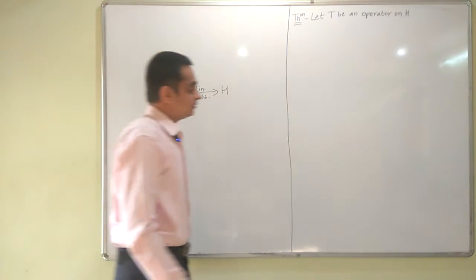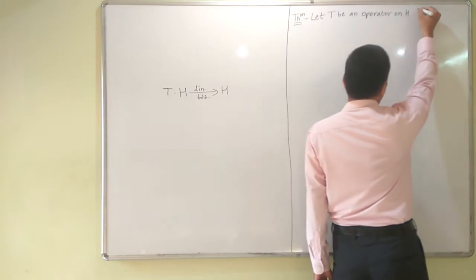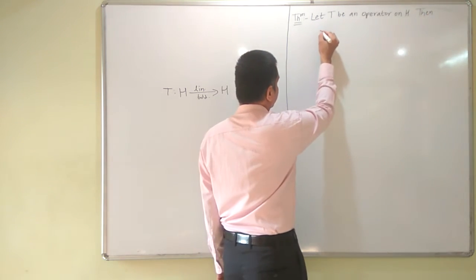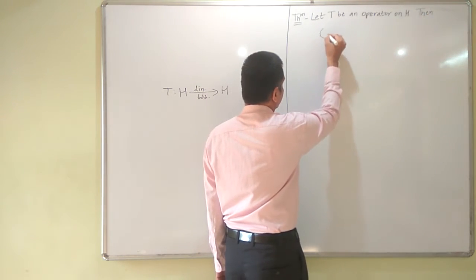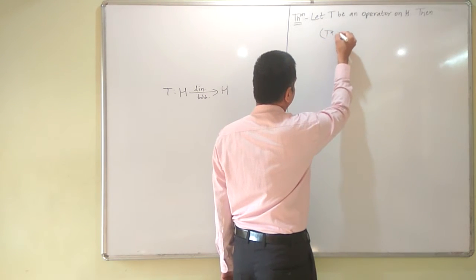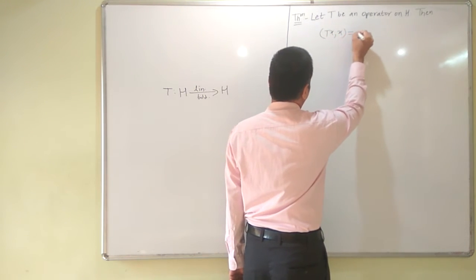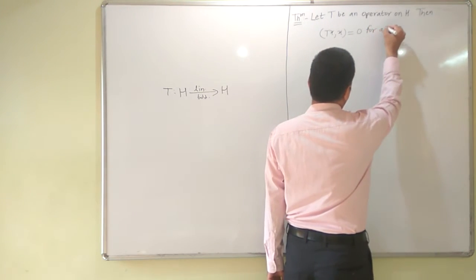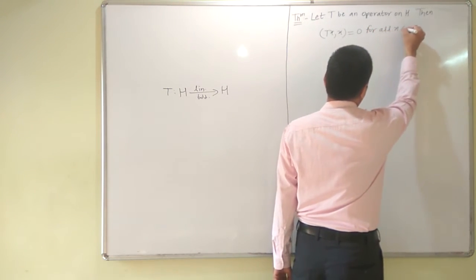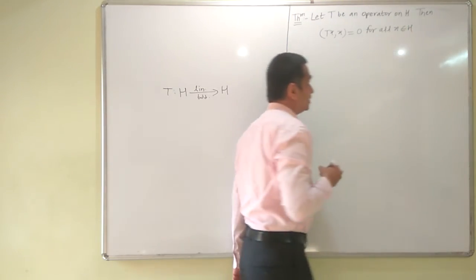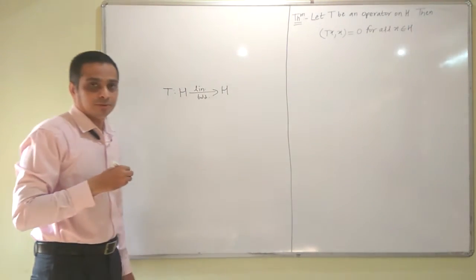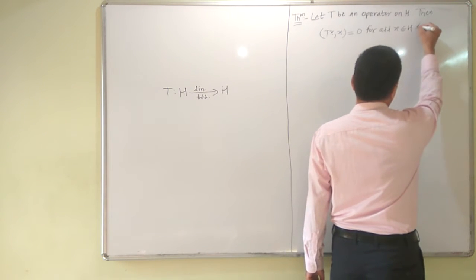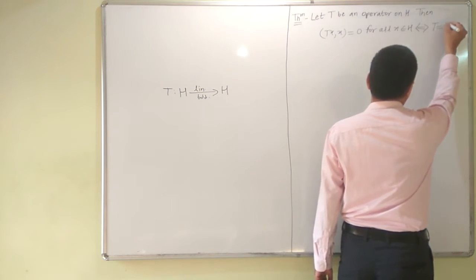Then we have to prove the property that the inner product of Tx and x is equal to 0 for all x belonging to H, if and only if T is equal to 0.